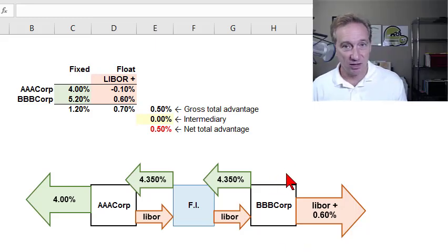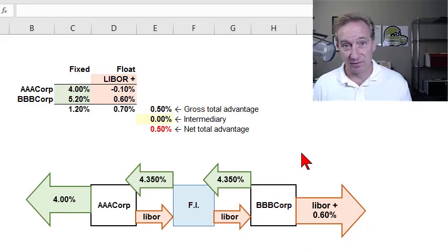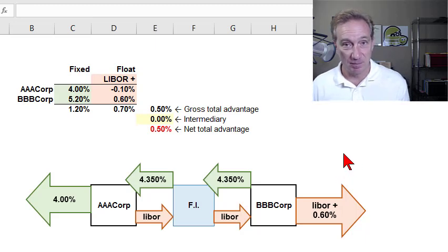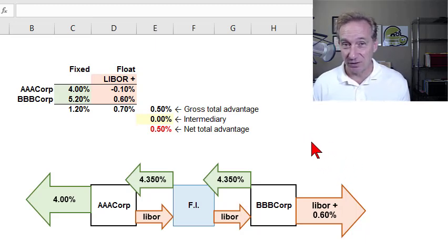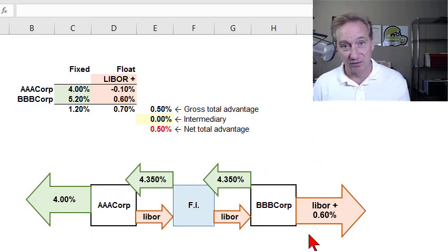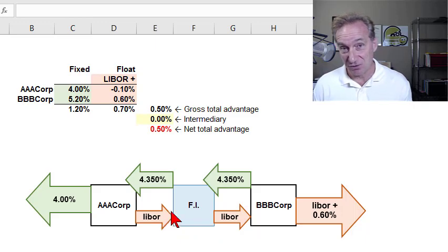A key argument put forth to explain the popularity of interest rate swaps is called comparative advantage. This is the counterintuitive idea that by introducing the swap we can reduce the borrowing cost of each of the counterparties.